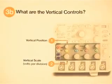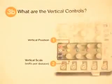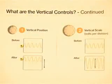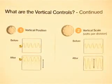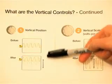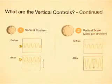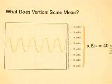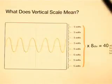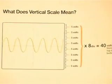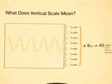That means each waveform can be positioned independently of the others on the screen. The two most important vertical controls are the vertical position and the vertical scale. The vertical position moves the waveform up and down the screen, and the vertical scale expands or compresses the waveform vertically. Vertical scale is expressed in volts per division. This particular model has eight vertical divisions — most scopes have ten.